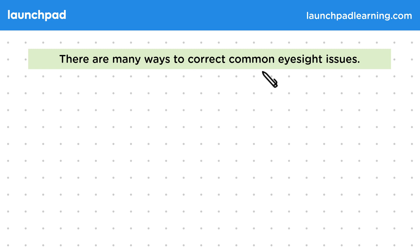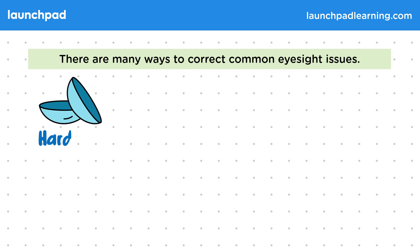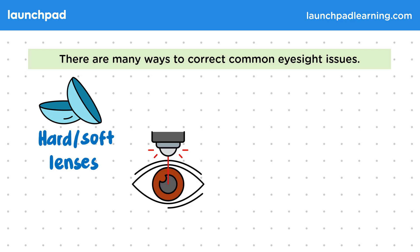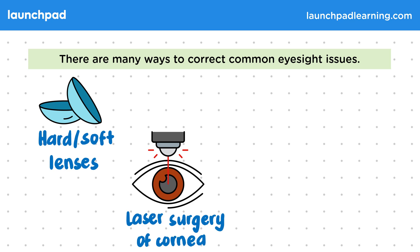There are many ways to correct common eyesight issues. We could use hard or soft contact lenses, which work like glasses — they bend the light more or less as required to fix the vision. Another option would be laser surgery, using a laser to physically change the shape of the cornea, which is the transparent layer at the front of the eye.